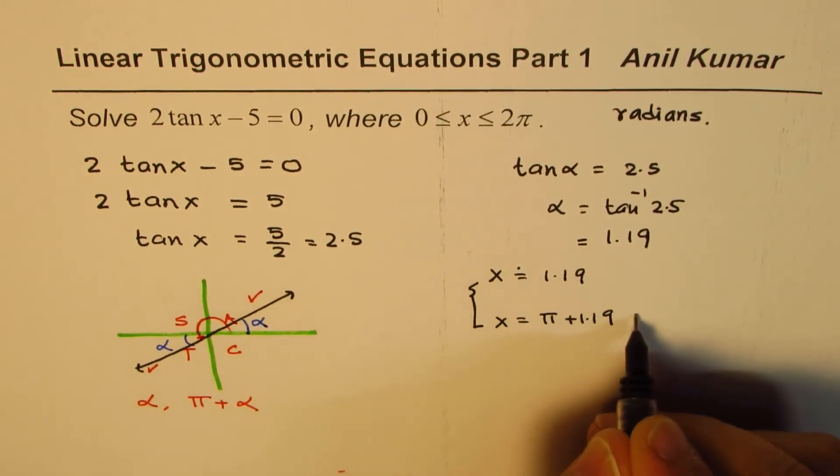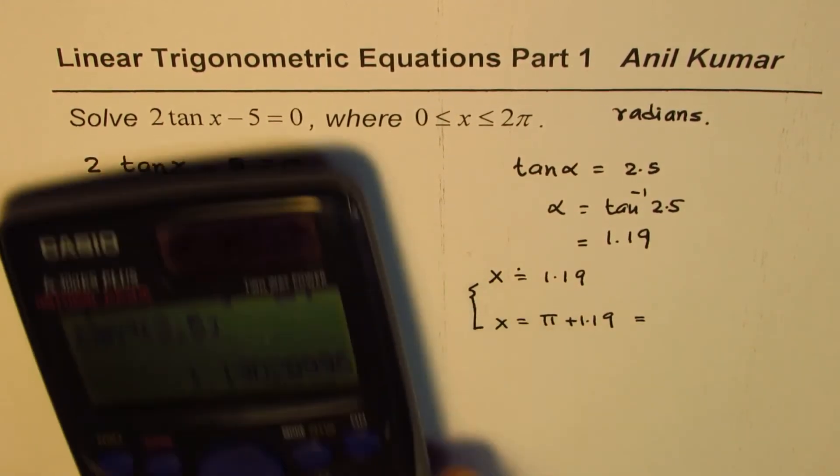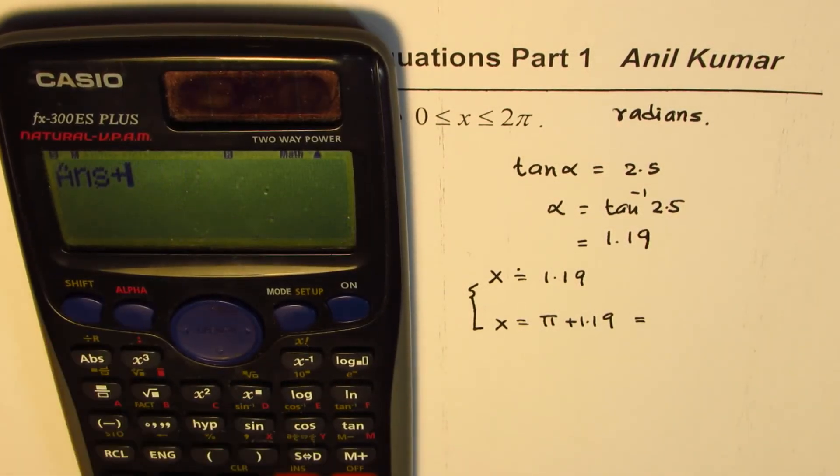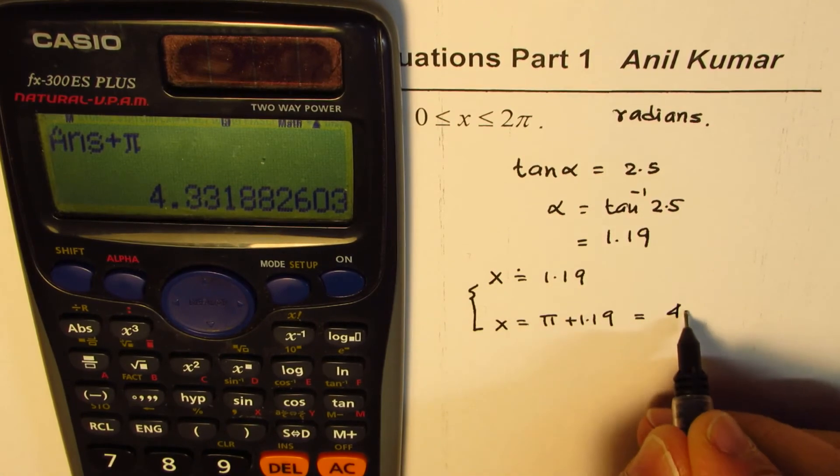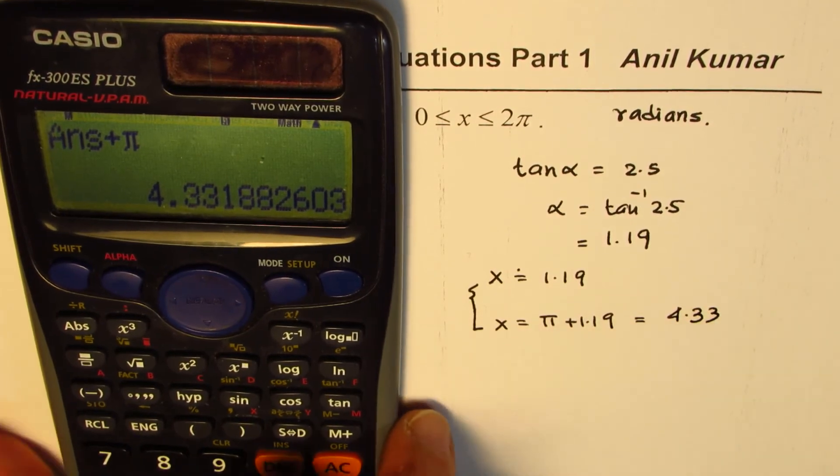So this is approximate value. Let's add pi to 1.19 to get the other value, plus pi equals to. So what we get here is 4.33.